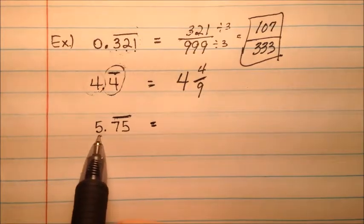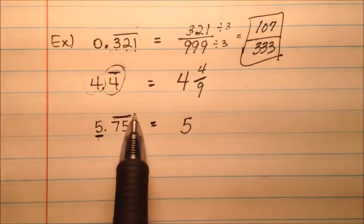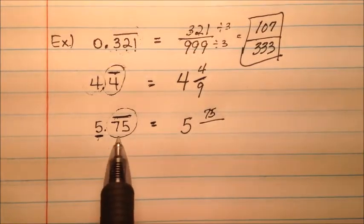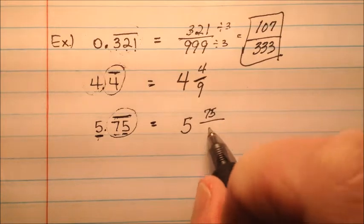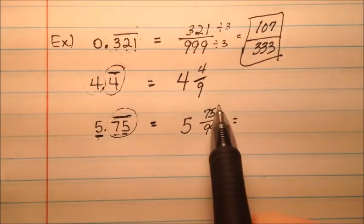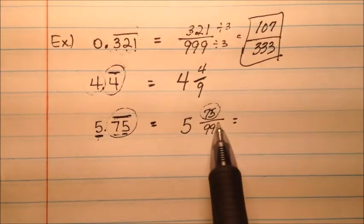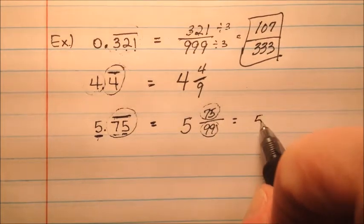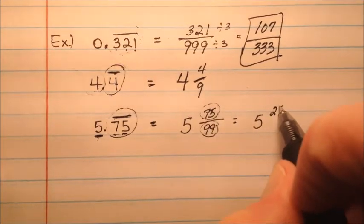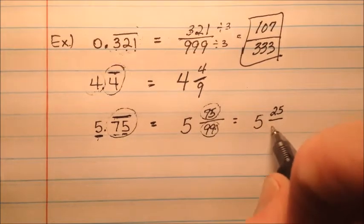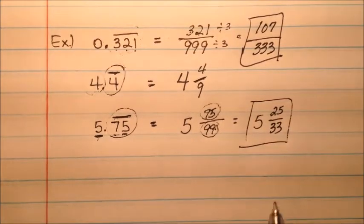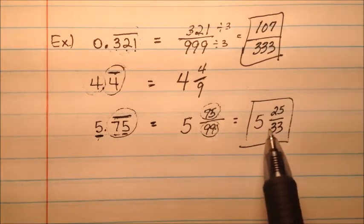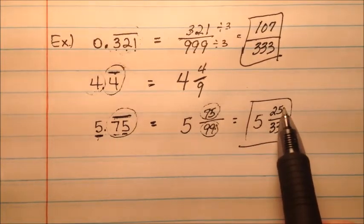And this last one, we have another whole part, so we'll say a 5 out front. Then we have these two digits that are repeating, so we have 75 over two 9s, just like that. We notice that this numerator can be divisible by 3, and also the denominator is divisible by 3. So it'll be 5 and 75 divided by 3 is 25, and 99 divided by 3 is 33. So this last example, 5.75 repeating, is going to be 5 and 25/33.